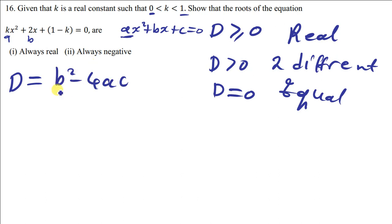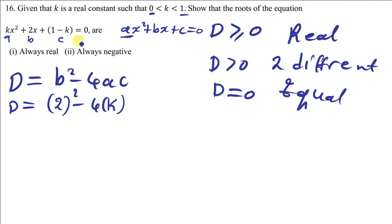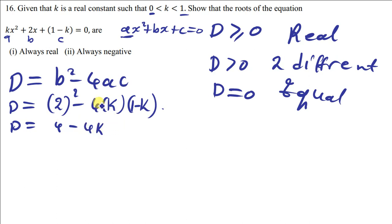Let us replace the given constants in the discriminant. D is now going to be equal to b squared — my b there is 2, so I put 2 squared — minus 4 times a, which is k, times c, which is 1 minus k. Simplifying: D equals 4 minus 4k plus 4k squared. So what we have gotten here is a quadratic expression in k.